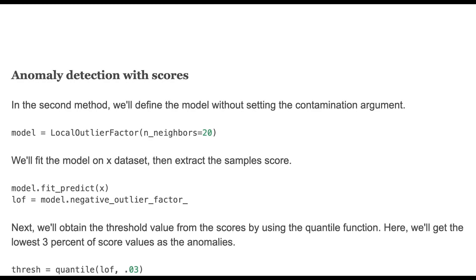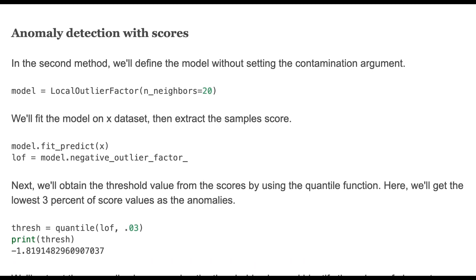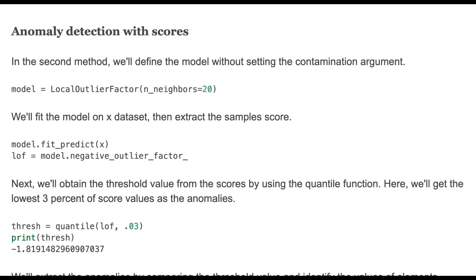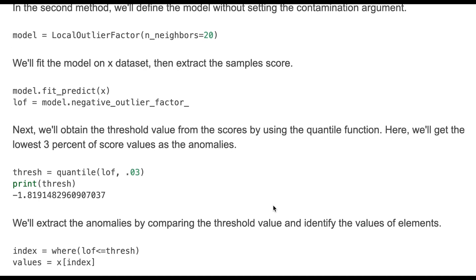The second method is detecting the anomalies by their scores. We'll define a model without setting the contamination argument here. And we'll fit the model on X dataset and extract the sample score. This negative_outlier_factor gives the sample score.